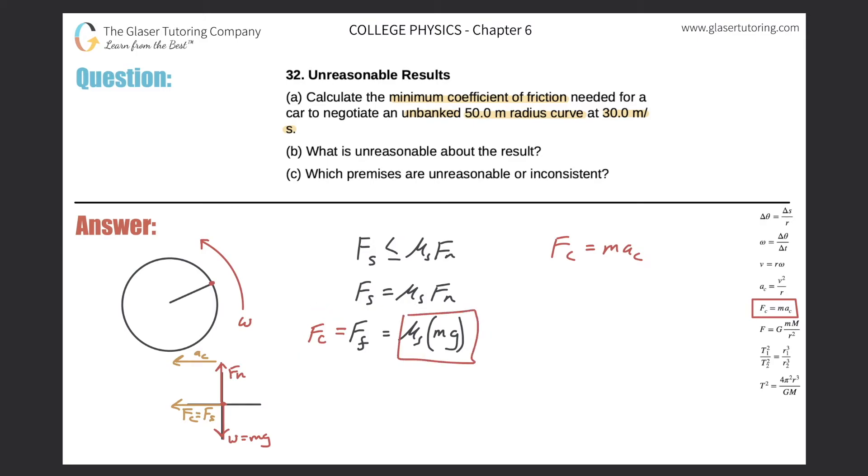Now I have coefficient of static friction multiplied by mg is equal to now m times ac. And if we're trying to find the coefficient of static friction, simply divide out now the mg from both sides. And notice what happens to the mass—it goes bye-bye, toodaloo.